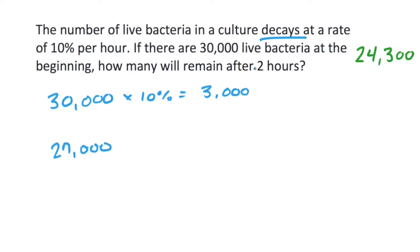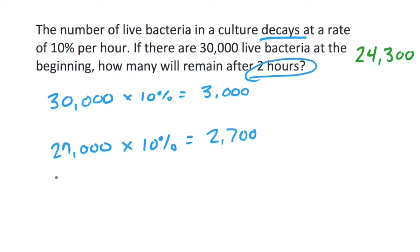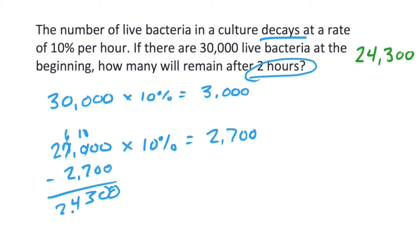Now we have to do it again because this is going to happen twice. So 27,000 times 10%, or 0.1, equals 2,700. Again we subtract, and we get 24,300.